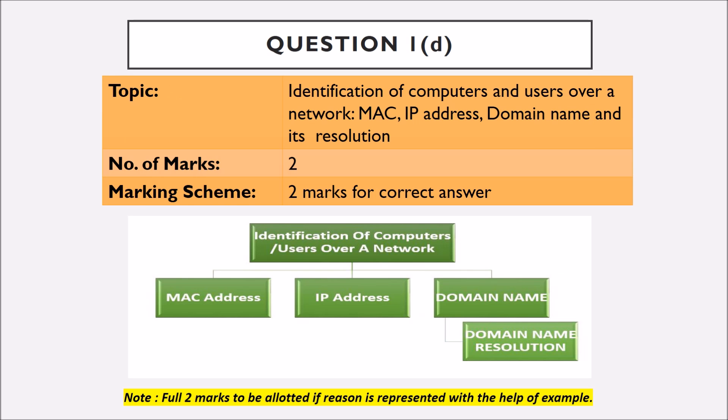Question number one part D is based on identification of computers and users over a network that is MAC address, IP address, domain name and its resolution. Full two marks will be given if reason is represented with the help of answer.